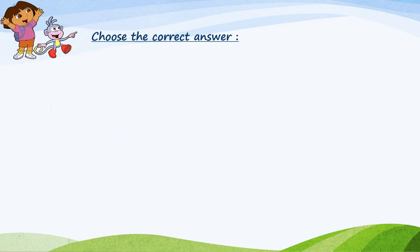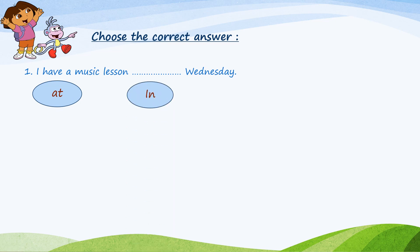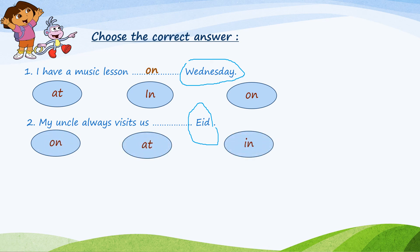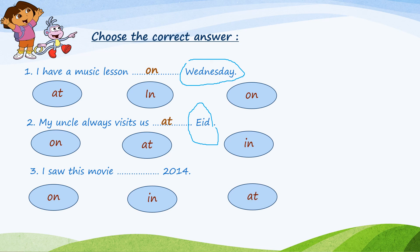Now it's your turn — choose the correct answer. Number one: I have a music lesson ___ Wednesday. What's your answer — at, in, or on? Here I have Wednesday, and it's one of the days of the week, so I have to put 'on.' Number two: My uncle always visits us ___ Eid. It's a specific time of the year, so I have to put 'at.' Number three: I saw this movie ___ 2014. Here I have 2014 — it's a year, so I must put 'in.' Thank you, boys and girls, and see you soon!